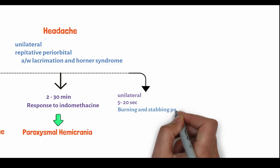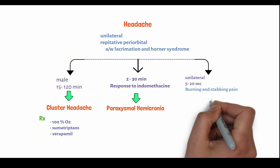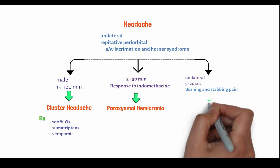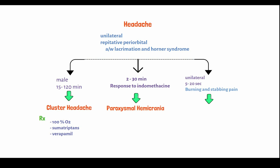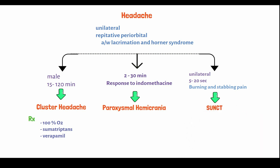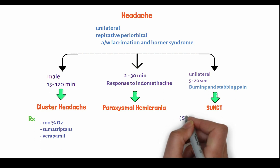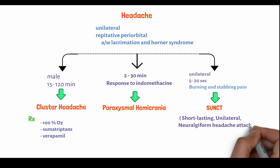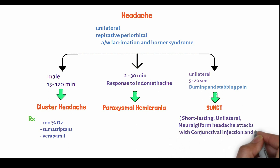The next one is again unilateral, persisting for 5 to 20 seconds. This is SUNCT — Short-lasting Unilateral Neuralgiform headache with Conjunctival injection and Tearing. It is characterized by sudden, short-lasting bursts of intense stabbing or burning pain on one side of the head, usually around the eyes. These attacks occur frequently throughout the day and are accompanied by redness and tearing of the eyes, and may cause nasal congestion.